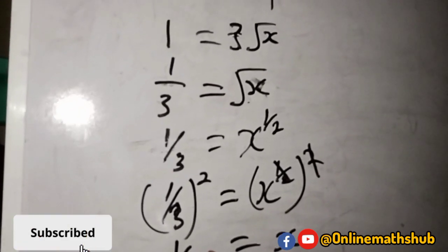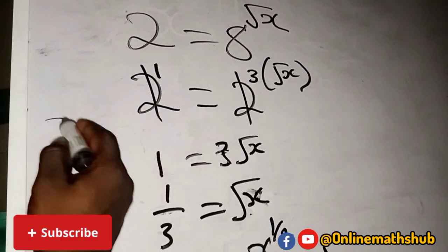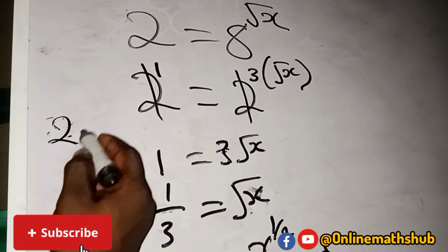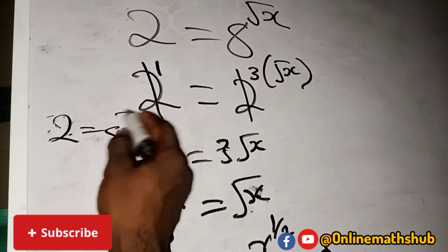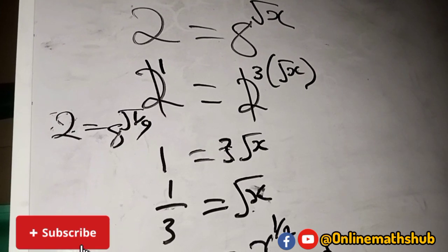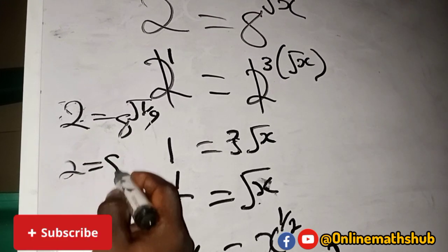So we have 2 is equal to 8 raised to power square root of 1 over 9. Taking the square root, the square root of 1 is 1 and the square root of 9 is 3.